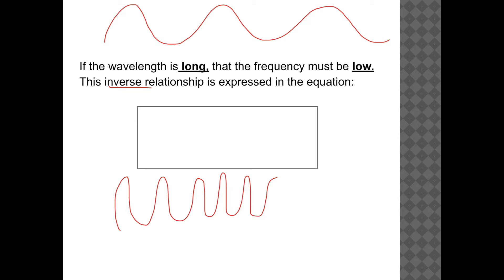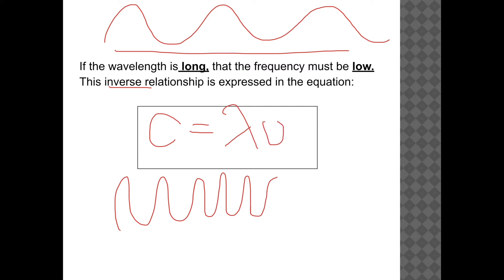There's no possible way to have a long wave with a high frequency — they are inverse to each other. From this, we have the equation C equals wavelength (lambda) times frequency (nu), where C is our speed of light. This equation is given to you on your formula chart, so it's not one we need to memorize; we just need to know how to use it.